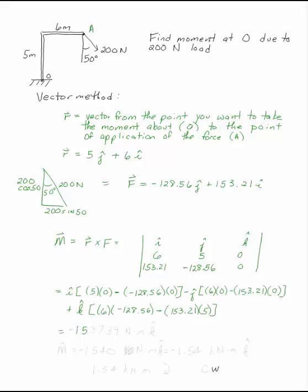Which gives you 1537.39 newton meters. Rounding this into three significant digits, you have 1540 newton meters or 1.54 kilonewton meters. This is in the negative k direction.